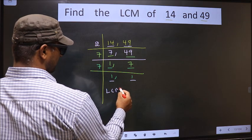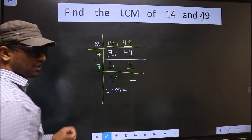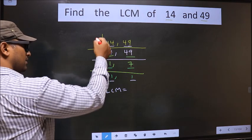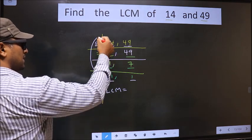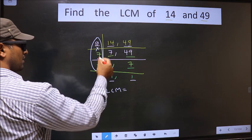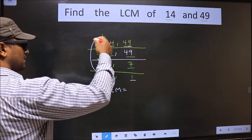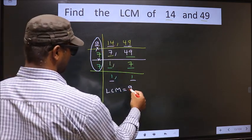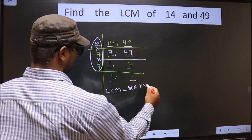So our LCM is the product of these numbers. Okay, product of these numbers. That is 2 into 7 into 7.